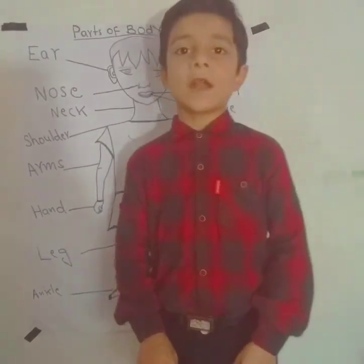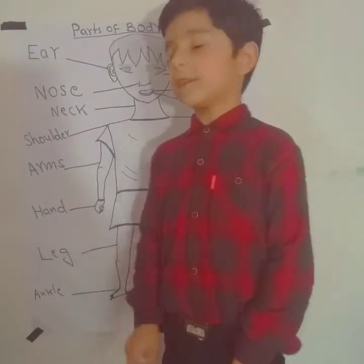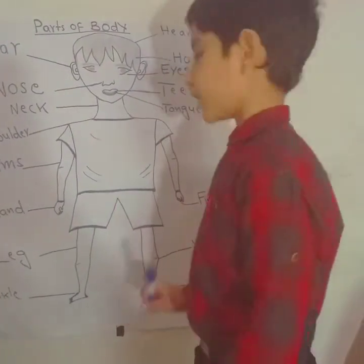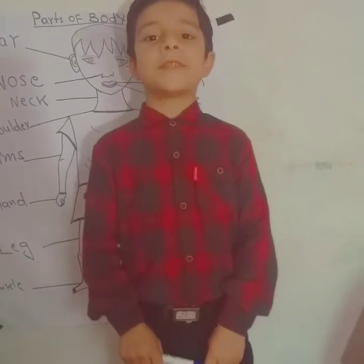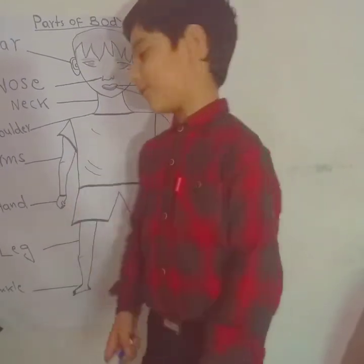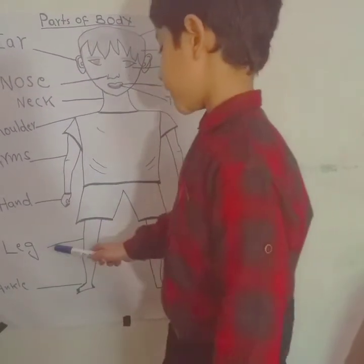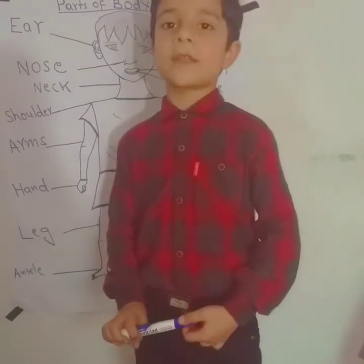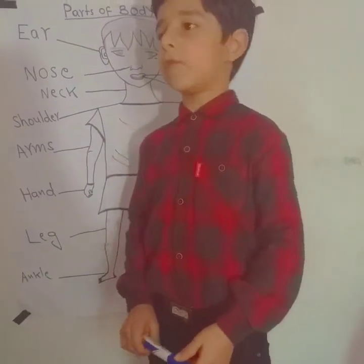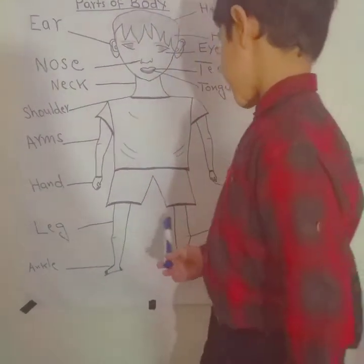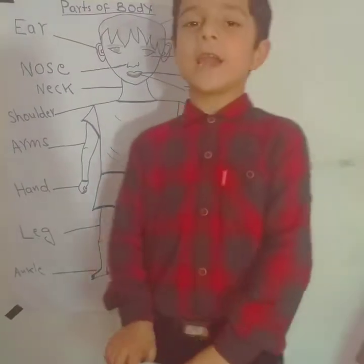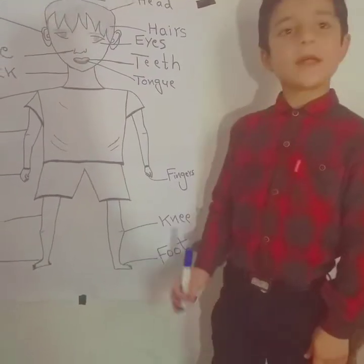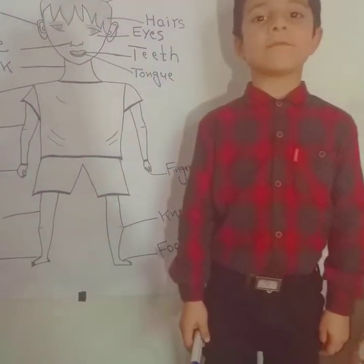Hands — we can touch things with our hands. Fingers — we can hold things with our fingers. Leg — we can stand and walk with our legs. Knee — we can bend our legs with our knee.